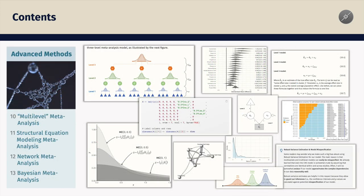In the advanced methods section, we introduce more involved but still highly relevant meta-analytic methods, such as three-level meta-analysis, robust variance estimation, structural equation modeling meta-analysis, network meta-analysis, and how to conduct meta-analysis within a Bayesian framework.